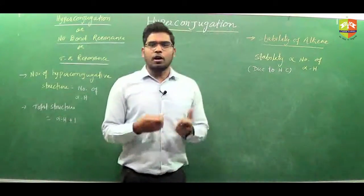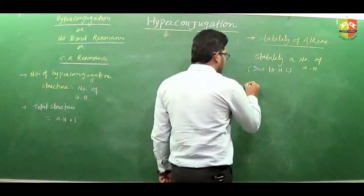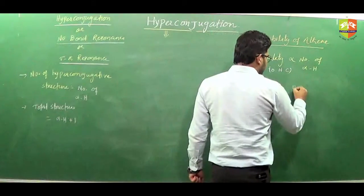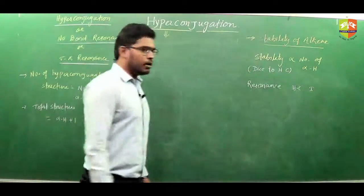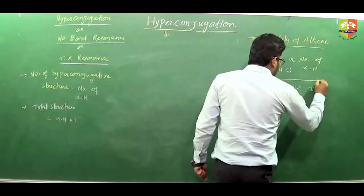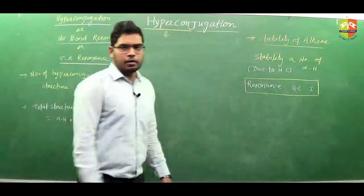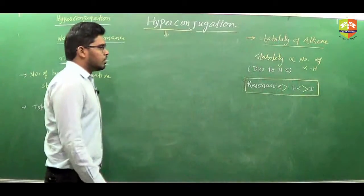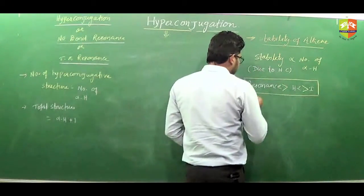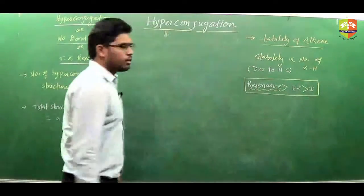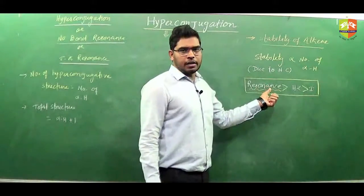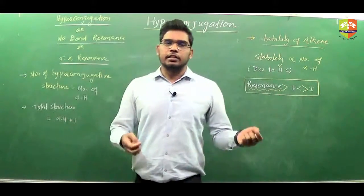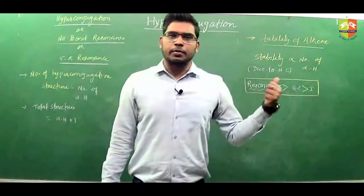But in a given molecule you can have all kinds of effects possible — we can have resonance, hyperconjugation, and inductive effect all possible. So when there are more than one type of effect present in a molecule, then stability will be defined in a specific order. Resonance is the dominating effect. So if resonance and hyperconjugation are both possible, then resonance effect will be dominating.